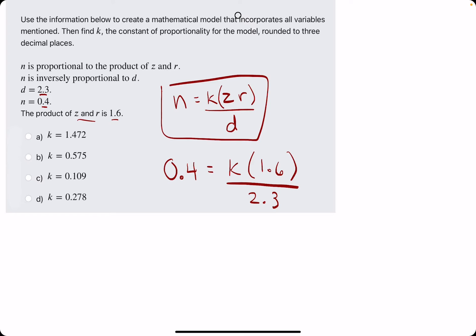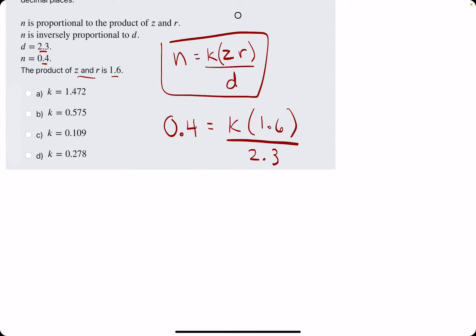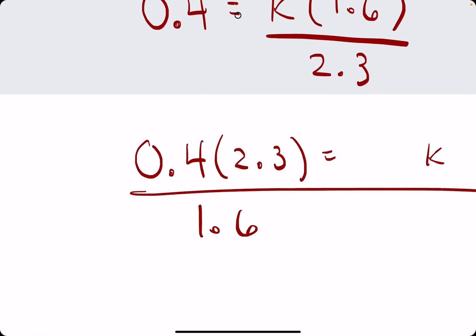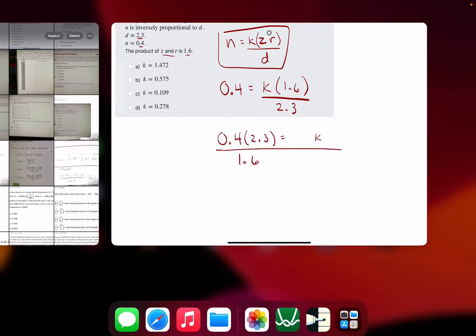So now we're just trying to isolate k. We multiply by 2.3, and then we divide by 1.6. So we will just plug this directly into Desmos.